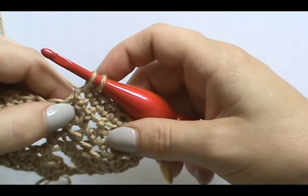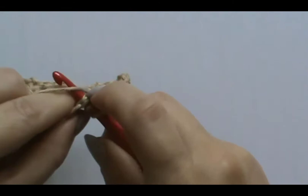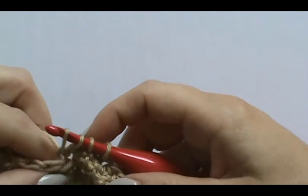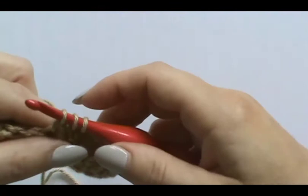Insert the hook in the stitch below. I like to work under just the two loops and not the actual space, and that gives you three loops on your hook. Now you're going to insert your hook into the first unworked stitch. Yarn over, pull through. That gives you four loops on your hook.